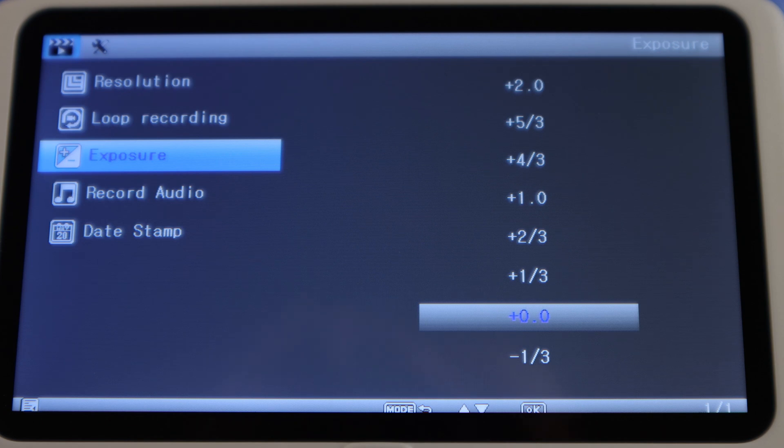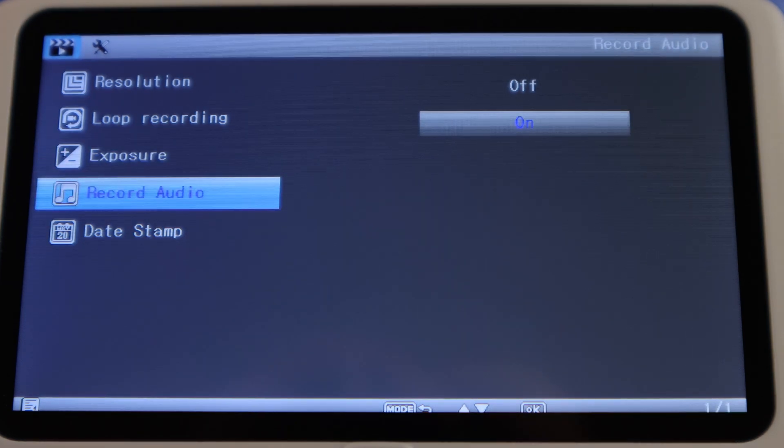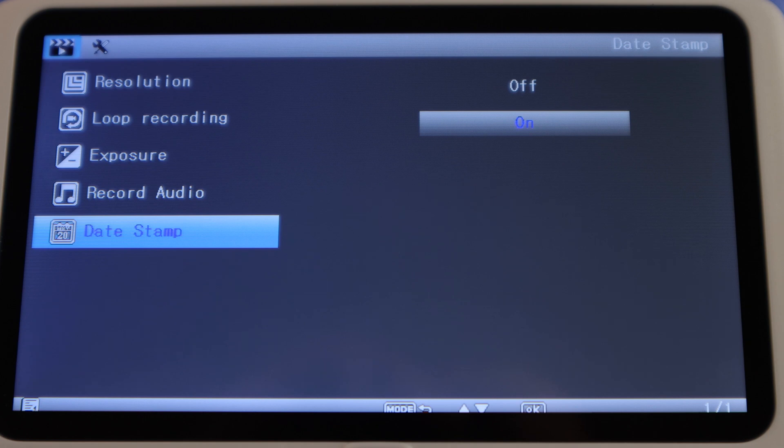Adjust exposure to adjust the brightness of the screen. Turn on and off audio recording, and toggle off and on the date stamp.